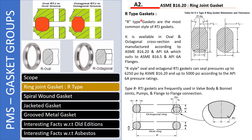Now let us talk about R type ring joint gaskets. We have two types here: one is oval, second is octagonal. It is available in both these cross sections. If you look at its surface, this is octagonal, and here it is oval type. If this is a flange, this oval type will be fitting and it will look like this — these two are the flange surfaces. Here we have a ring type joint, and this oval RTJ gasket will be there. In octagonal, it will fit inside these two flange surfaces like this. If you cut this gasket at this point, it will look like this.